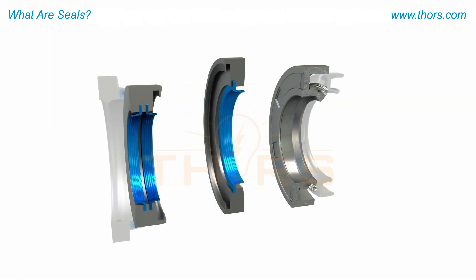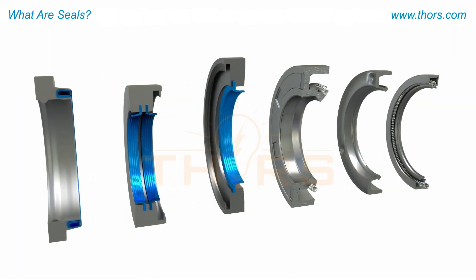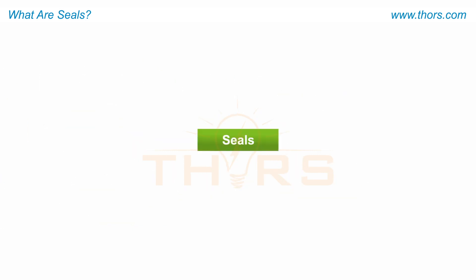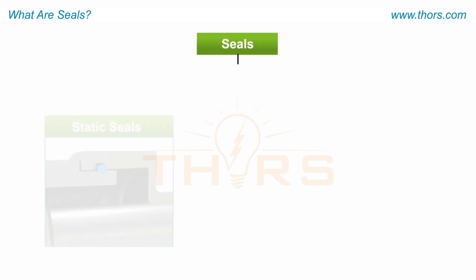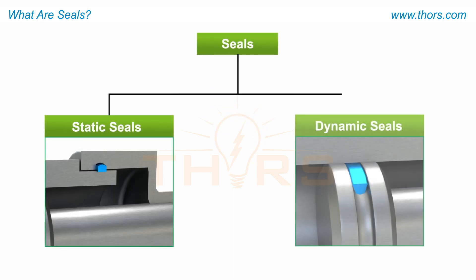There are many different types of seals that use a wide variety of sealing principles. Seals are broadly classified into two main types: static seals and dynamic seals.